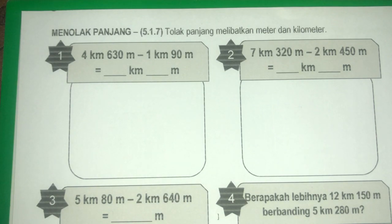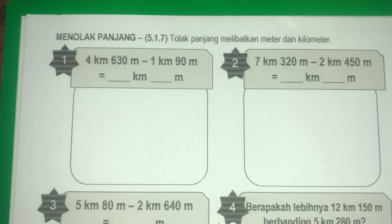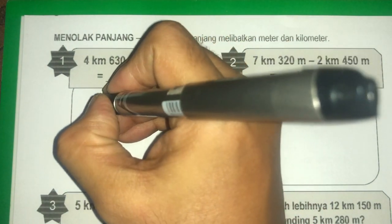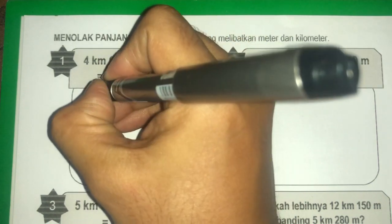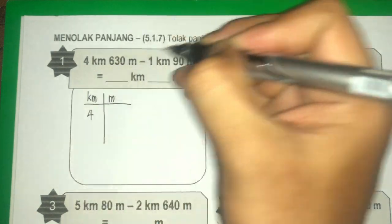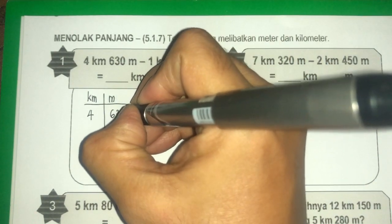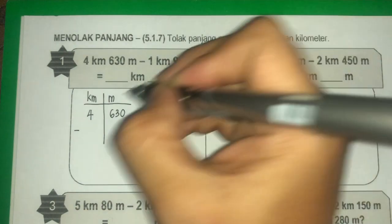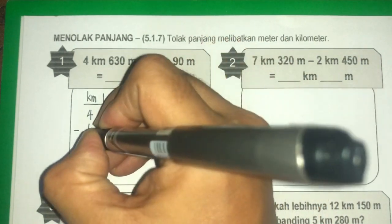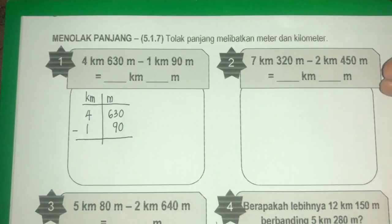Contoh soalan yang pertama: 4 kilometer 630 meter tolak 1 kilometer 90 meter. Jawapan diberikan dalam kilometer dan meter. Pertama sekali kita akan buat pembahagi antara unit kilometer dan juga meter. Masukkan nombor dengan betul — 90 letak elok-elok ikut nilai tempat dia.